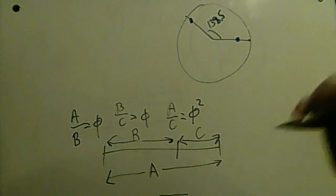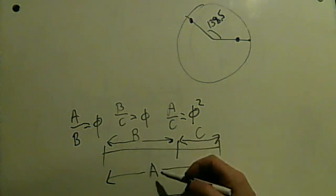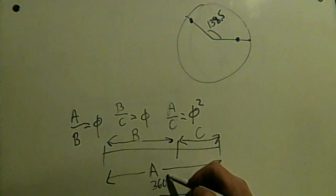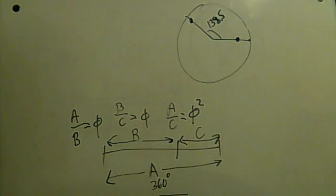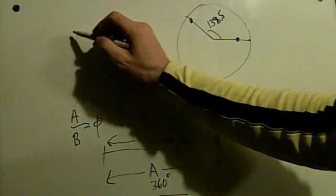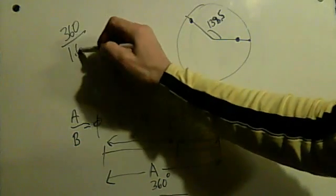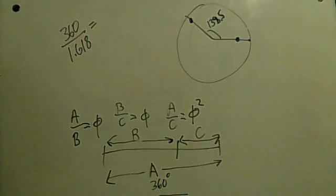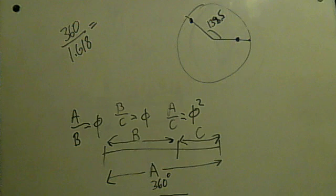If you took 360 degrees and divided it into a golden ratio, you would take 360 and divide it by 1.618. What would you get? 360 divided by 1.618 equals 222.5 degrees.